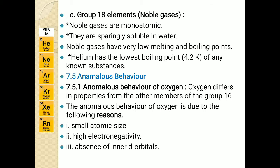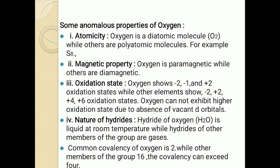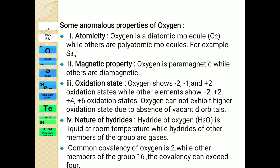Now we will see the actual anomalous properties of oxygen one by one. The first one is atomicity — oxygen is a diatomic molecule. When a molecule of oxygen is formed, two oxygen atoms come together, so we always write its formula as O₂.